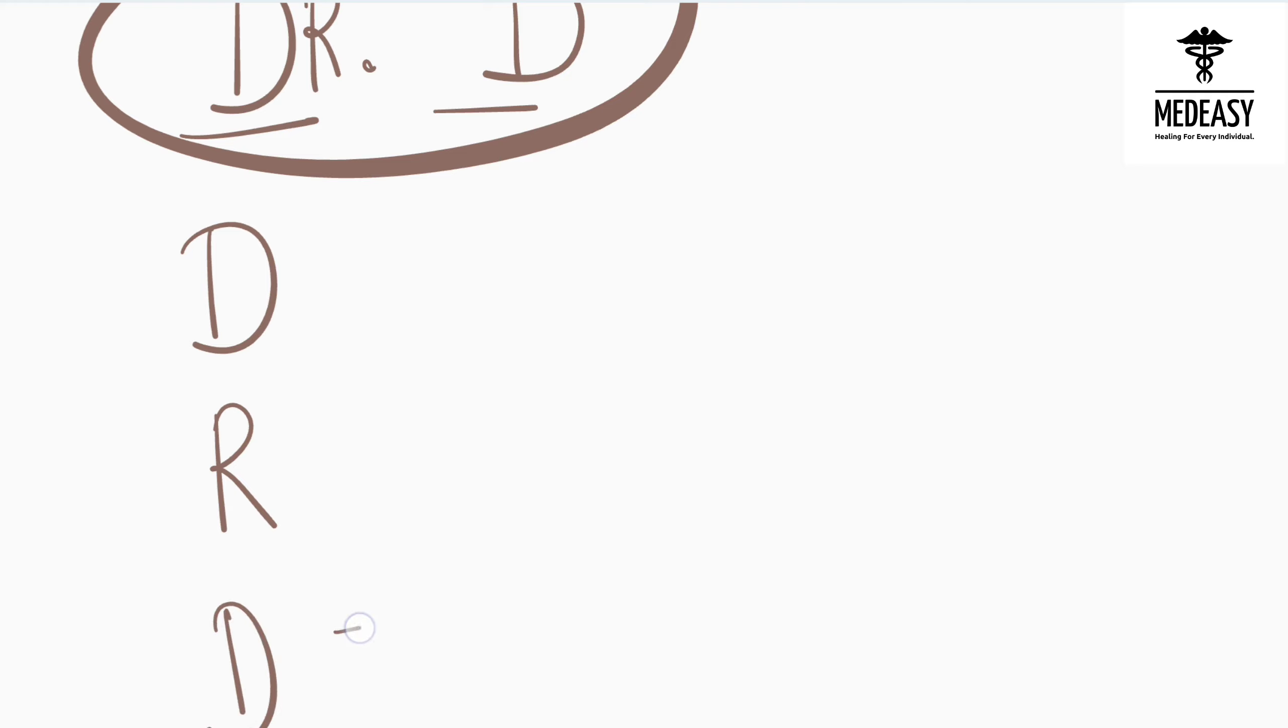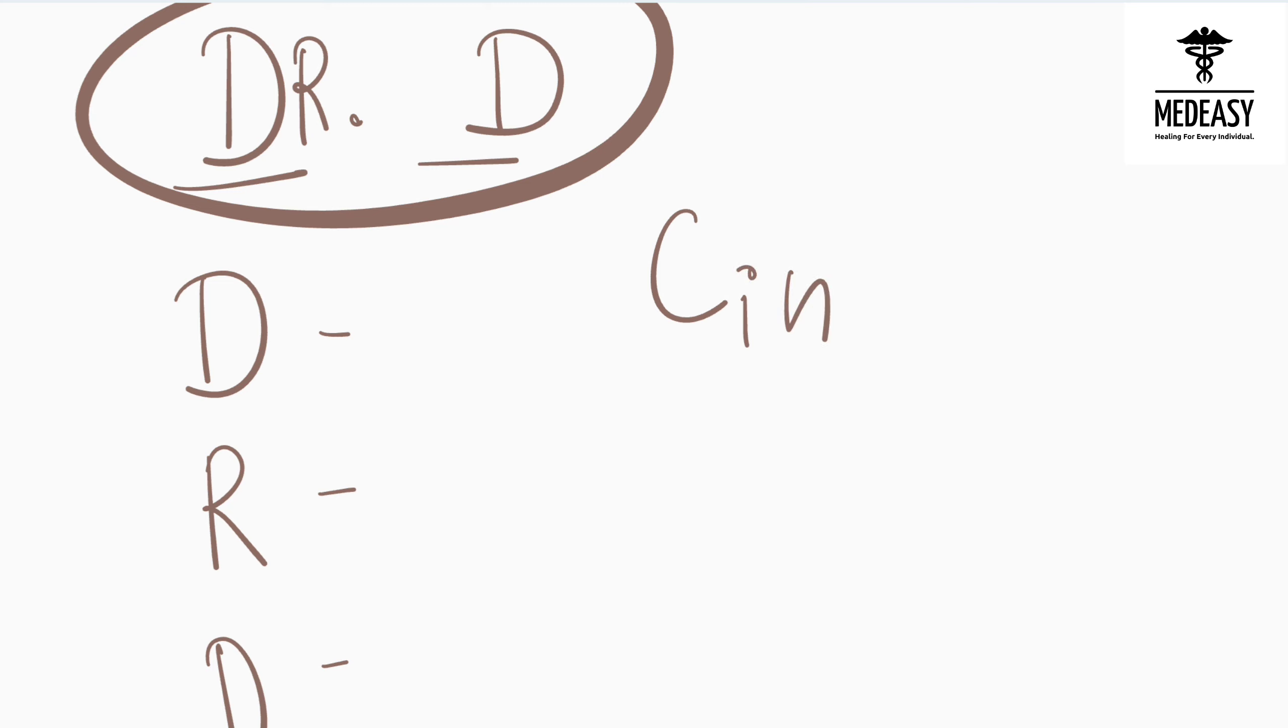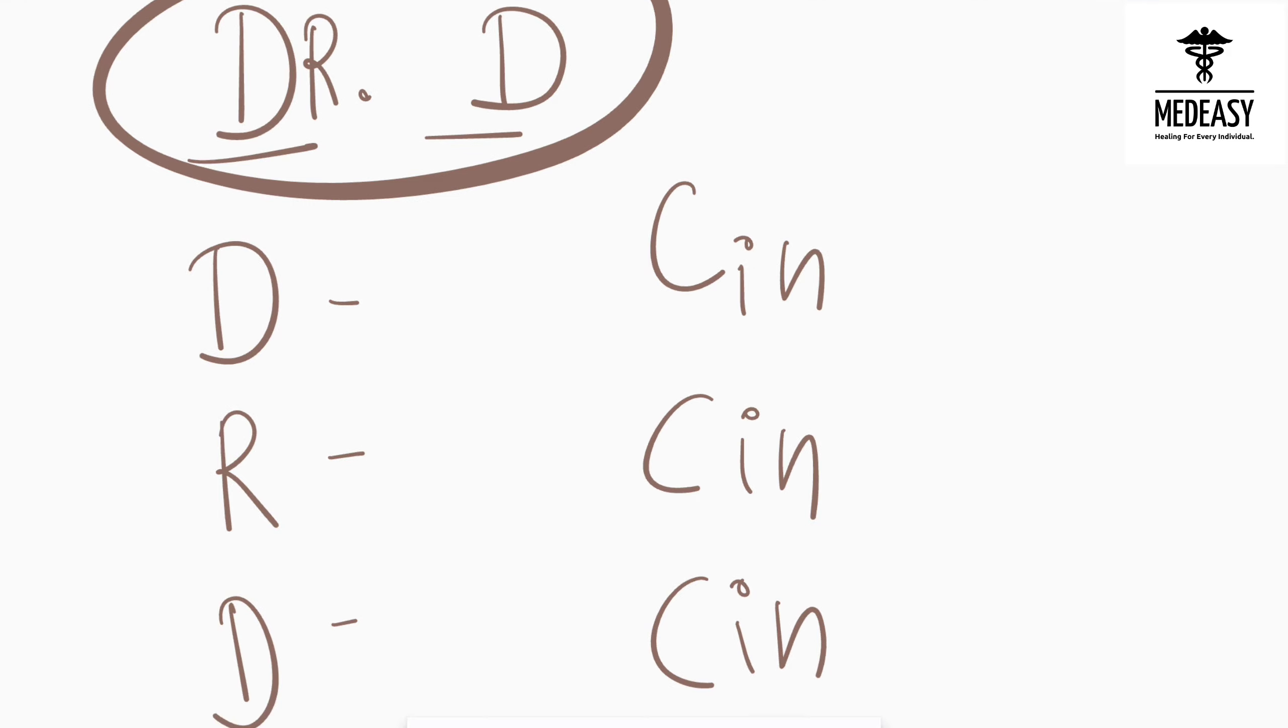First you have to remember all drugs end with -cin, so the last three letters of these drugs are cin. We will see the starting letters now. Starting letter for D is Doxorubicin, so first drug is Doxorubicin.